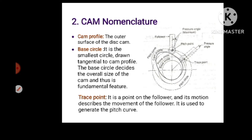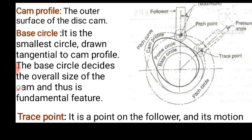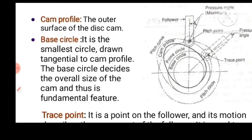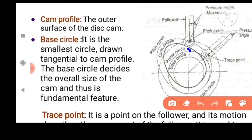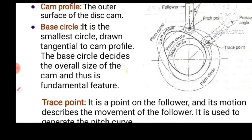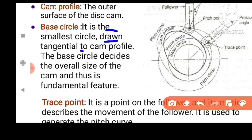The cam nomenclature: the first term is the base circle. We will use the cam profile. The cam profile is shown in black color. The base circle is the smallest circle drawn tangential to the cam profile. The base circle determines the cam size. The base circle is tangential to the cam profile — once the base circle is set, it gives the cam profile more easily.